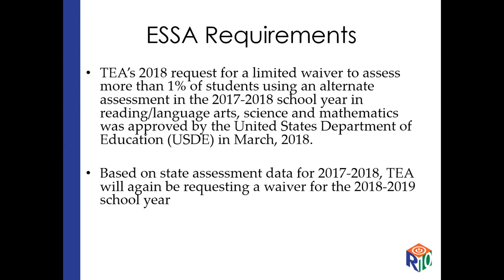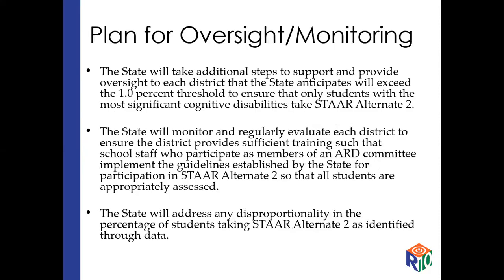Last year we had to request a waiver because we were over 1%, and this year we will be requesting it again. Unfortunately our numbers of students taking the test didn't go down — they actually went just ever so slightly up. So one of the things that the state has wanted to do is to make sure that we've given districts the correct information about who the appropriate students are to take STAR Alternate 2, and I hope that this video will give you a little bit of support and guidance as you make those decisions throughout the school year.